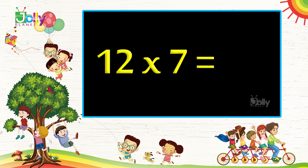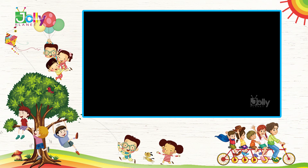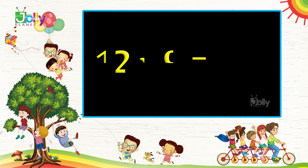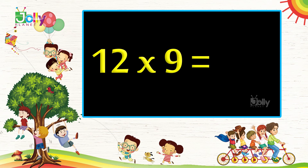Twelve sevens are eighty-four. Twelve eights are ninety-six. Twelve nines are one hundred and eight.